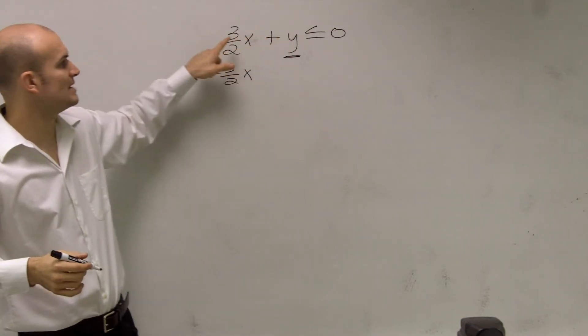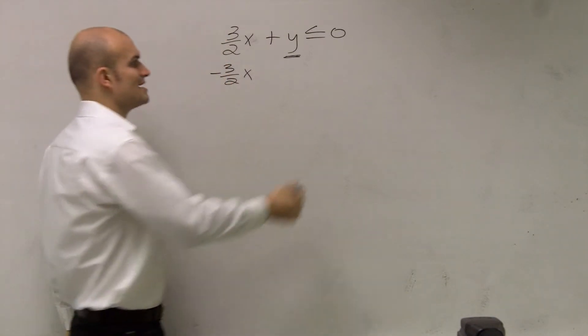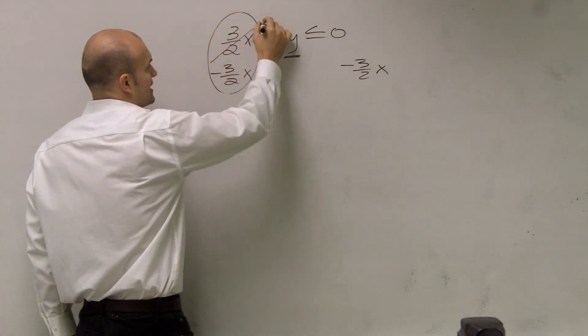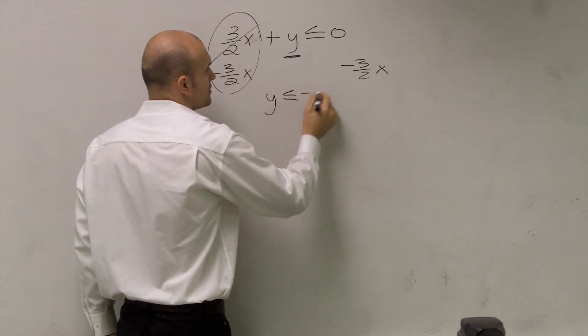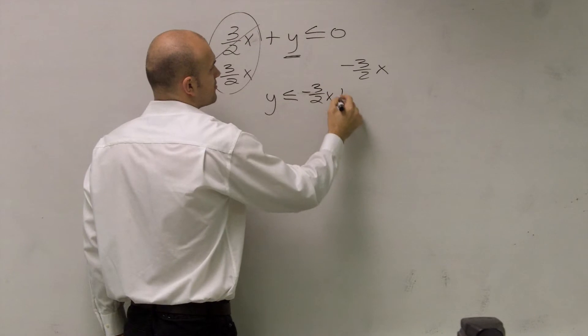Essentially, that y is being added by that because that's a positive that's being added. So I'm going to subtract the 3 halves x on both sides. Therefore, that's now going to cancel to 0, and I'm left with y is less than or equal to negative 3 halves x plus 0.